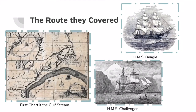The voyage of the HMS Beagle sailed off in 1831, boarding passengers like Charles Darwin, a British naturalist. His job was to study plants and animals at each stop of the voyage. In 1860, the first chart of the Gulf Stream was published by the US Coast Survey.